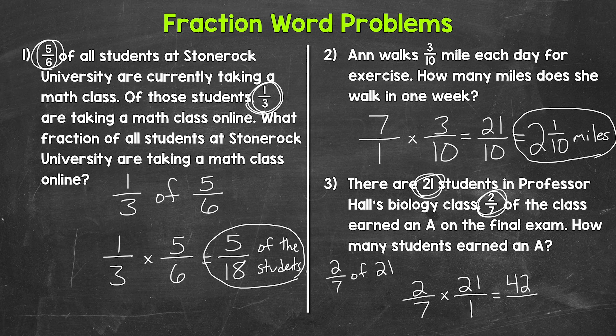Seven times one gives us 7, so we end up with 42-sevenths, which is an improper fraction. Converting to a mixed number: 42 divided by 7 gives us 6, with no remainder. So we end up with a whole number — 6 is our answer. How many students earned an A? 6 students.